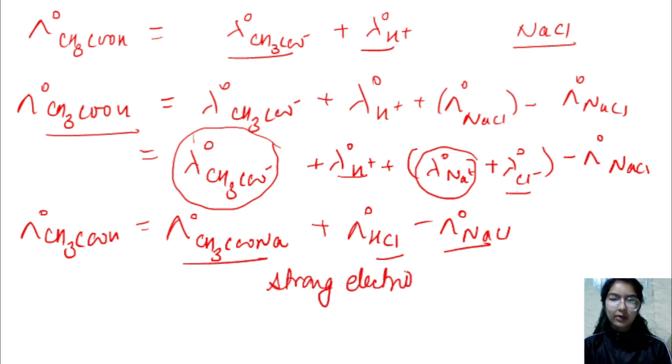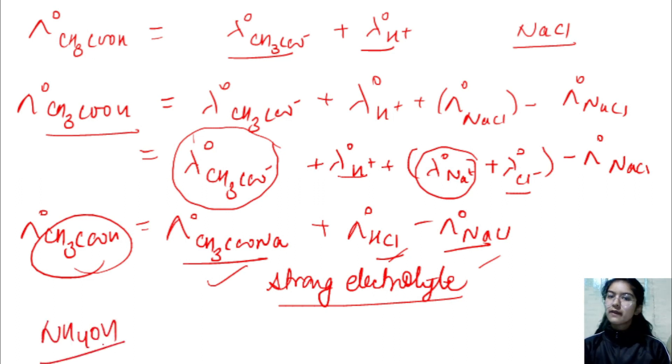Many times, our question comes - in the question, if I ask you, how do I represent these values? I will represent this method. And similarly, many times, you will be asked CH3COOH value, and the value of limiting molar conductivity for CH3COONa, HCl, or NaCl is given. This is one example. This is related to NH4OH. It is a weak electrolyte, so you can calculate the value in the same way.